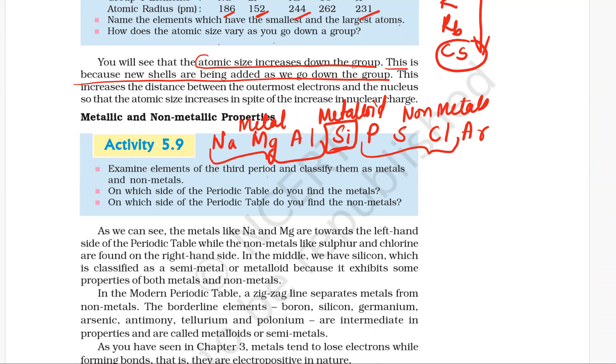On which side of the periodic table do you find metals? On the left side we find metals. On which side of the periodic table do you find non-metals? On the right side lies non-metals.